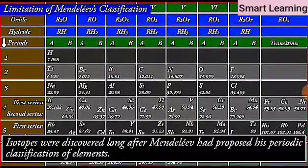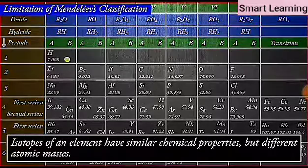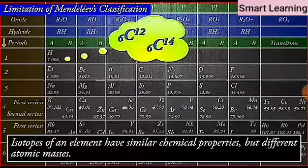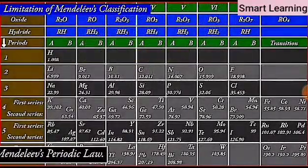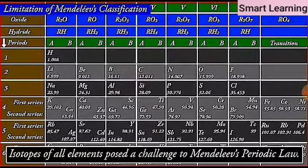Isotopes were discovered long after Mendeleev had proposed his periodic classification of elements. Isotopes of an element have similar chemical properties but different atomic masses. Thus, isotopes of all elements posed a challenge to Mendeleev's periodic law.